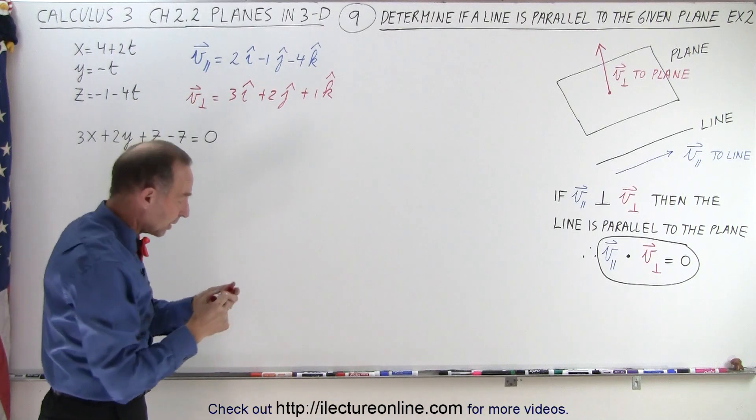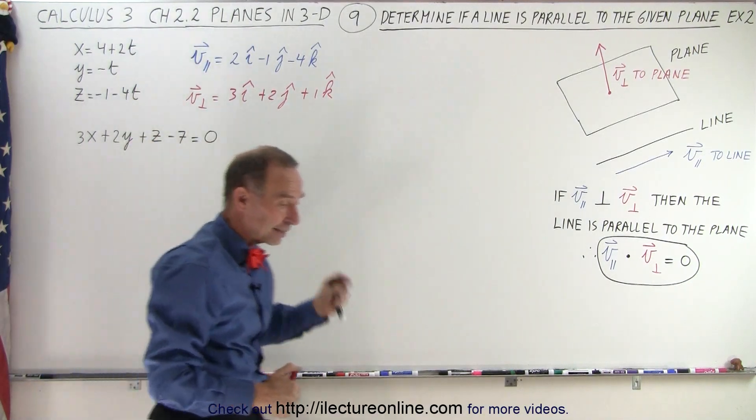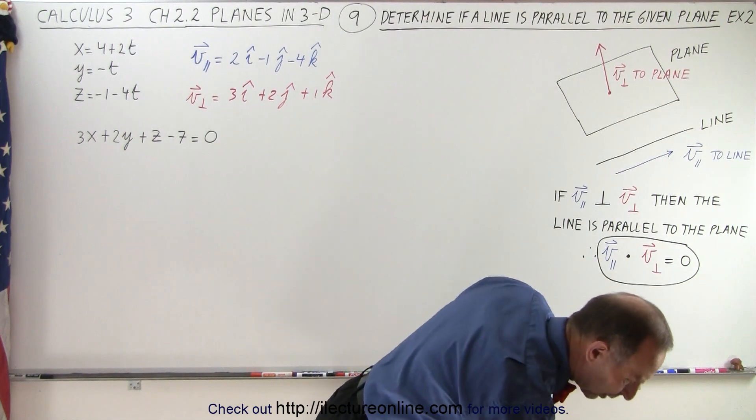Now all we have to do is take the dot product of those two vectors, and if it's equal to 0, then we know that that line is equal to that plane.